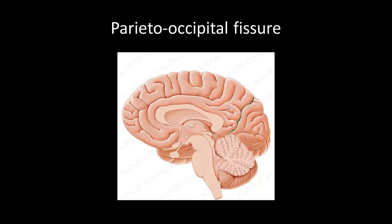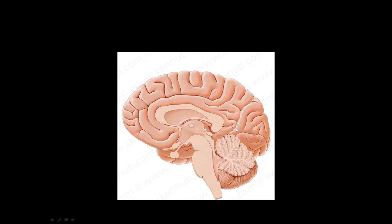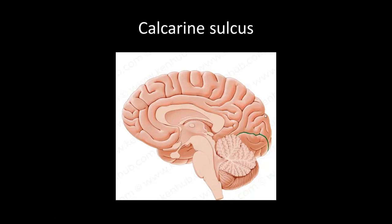Next we have the parieto-occipital fissure — our parietal lobe here and our occipital lobe here, with the fissure as a landmark separating those two. Then we have the calcarine sulcus within our occipital lobe, highlighted in green, which separates different functional areas of the occipital lobe.